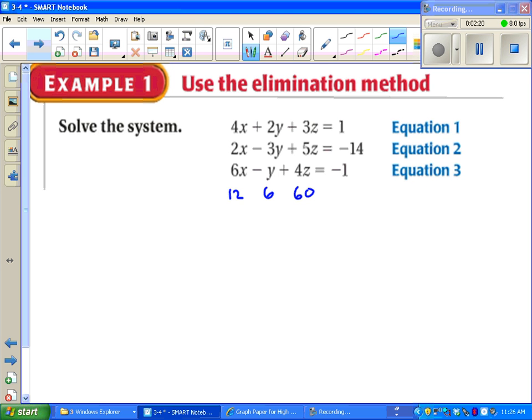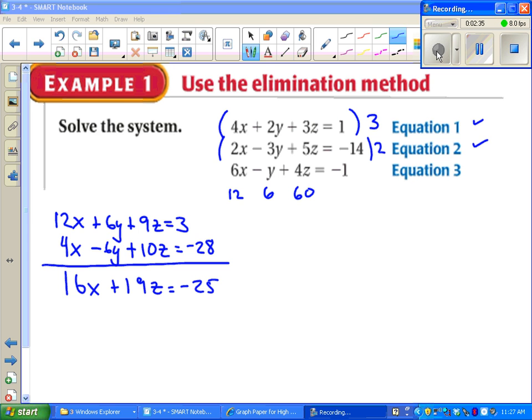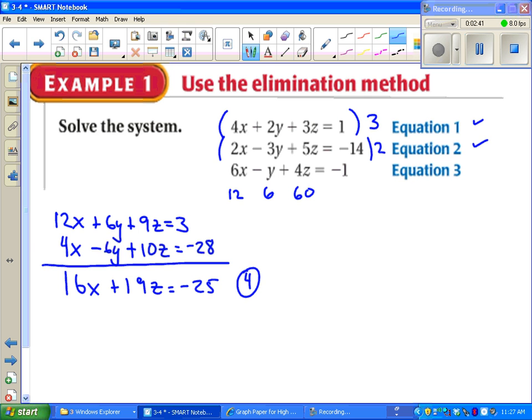I actually choose two equations. I want to get rid of the y in equation 1 and equation 2 first. So if I'm going to make that 6 and negative 6, I have to go 3 times this, and 2 times this one. Let's see what that does. After all that elimination, I get a new equation. 16x plus 19z equals negative 25. I'm going to call that equation 4.